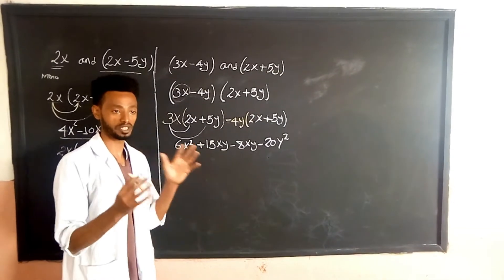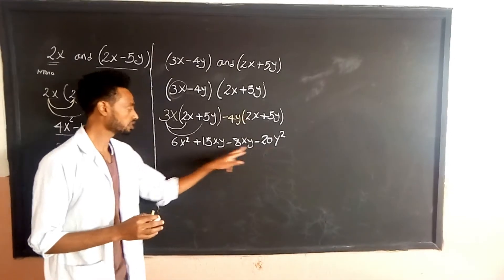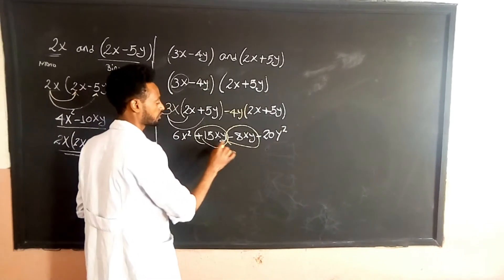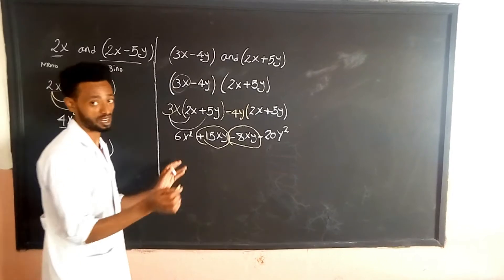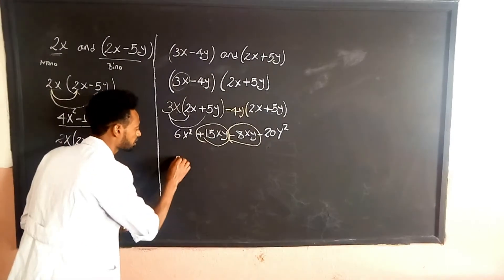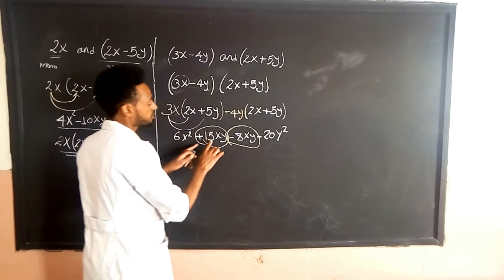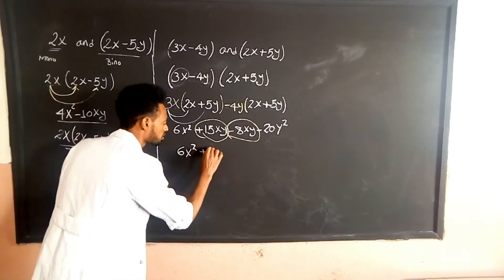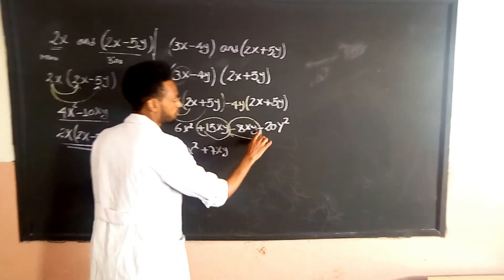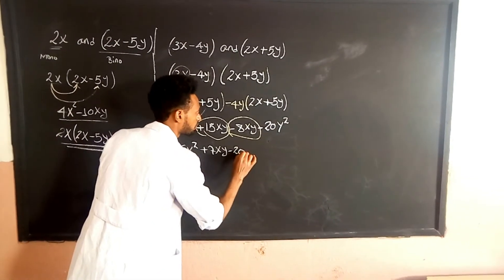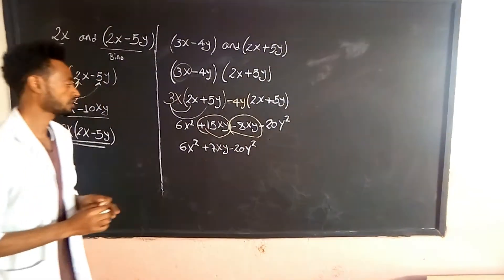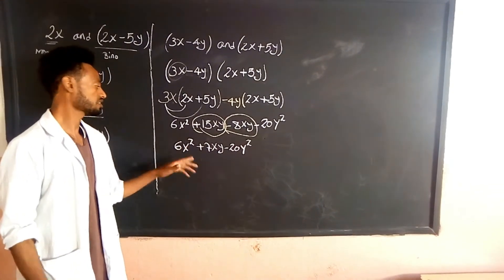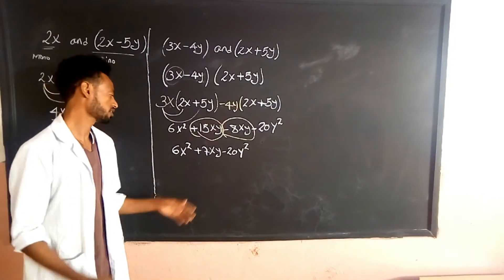Like symmetry — the same variables. So combining: 6x squared, 15xy minus 8xy gives 7xy, plus the remaining terms. The same variable terms are collected together.